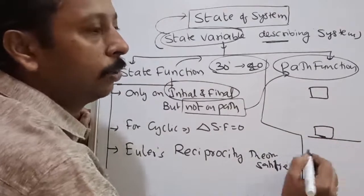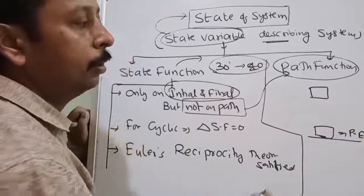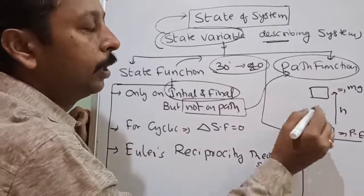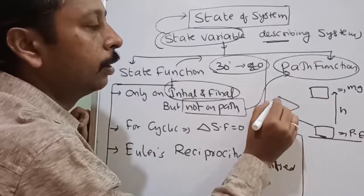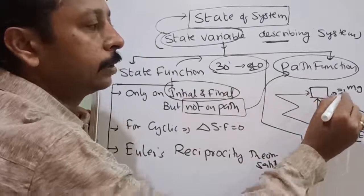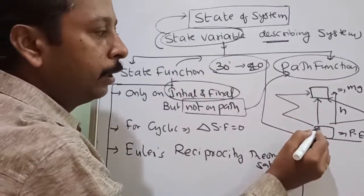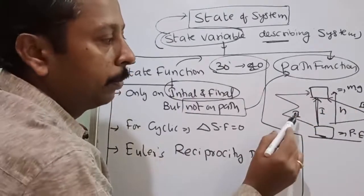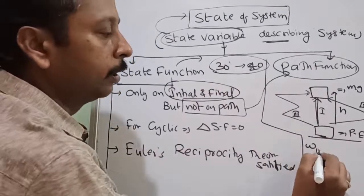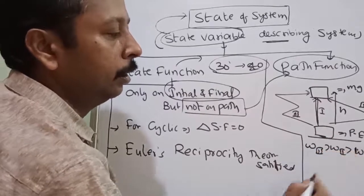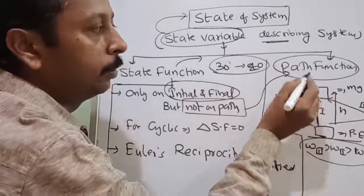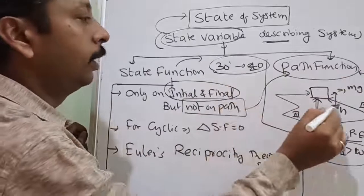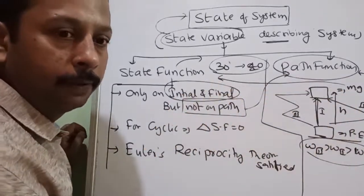Potential energy is a state function. If I take an object to a certain height, its potential energy is the same regardless of the path taken — whether I went by path one, two, or three, I may have to do more work via a longer path, but the potential energy depends only on the height. So potential energy is a state function. A path function, on the other hand, depends upon the direction and how I went from one place to another.